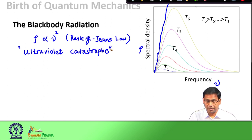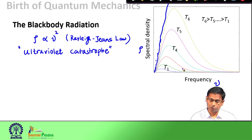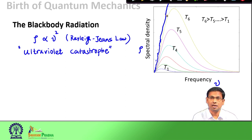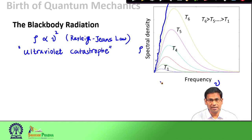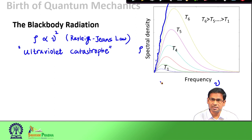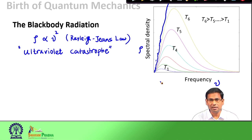Why was this called a catastrophe? Because the area under these curves represents the energy the black body is emitting. If you find the area under the Rayleigh-Jeans curve, you see that since this curve is unbounded — it simply goes up as a function of frequency — the area under it is in principle infinite. The Rayleigh-Jeans law therefore predicts that any black body at any temperature would emit an infinite amount of energy, which is not what we observe and is not a meaningful result. This ultraviolet catastrophe was greatly bothering scientists, and that is when Max Planck looked at this problem.